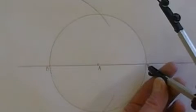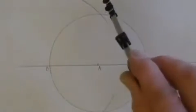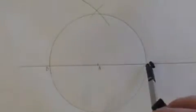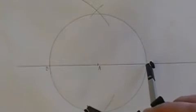Keep the setting the same and set the point at point C, and draw intersecting arcs above and below the circle.